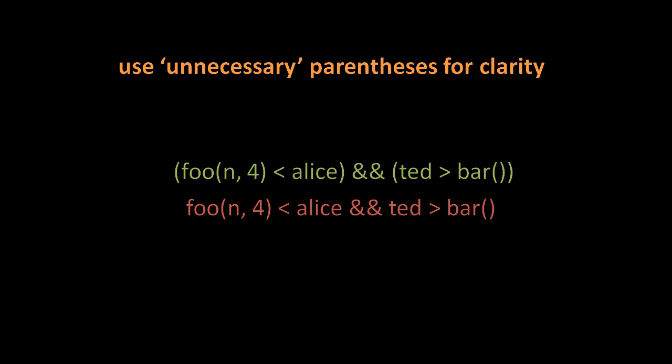It's often a good idea when writing expressions to use unnecessary parentheses for clarity — that is, to include parentheses around sub-expressions which otherwise don't require them. For example, we have a less-than operation and a greater-than operation connected by the and operator. While and has lower precedence than either, the intent is visually clearer if we add parentheses around both operands. This also helps programmers who forget which operators have higher precedence than others; with the extra parentheses, they just don't have to think about that.